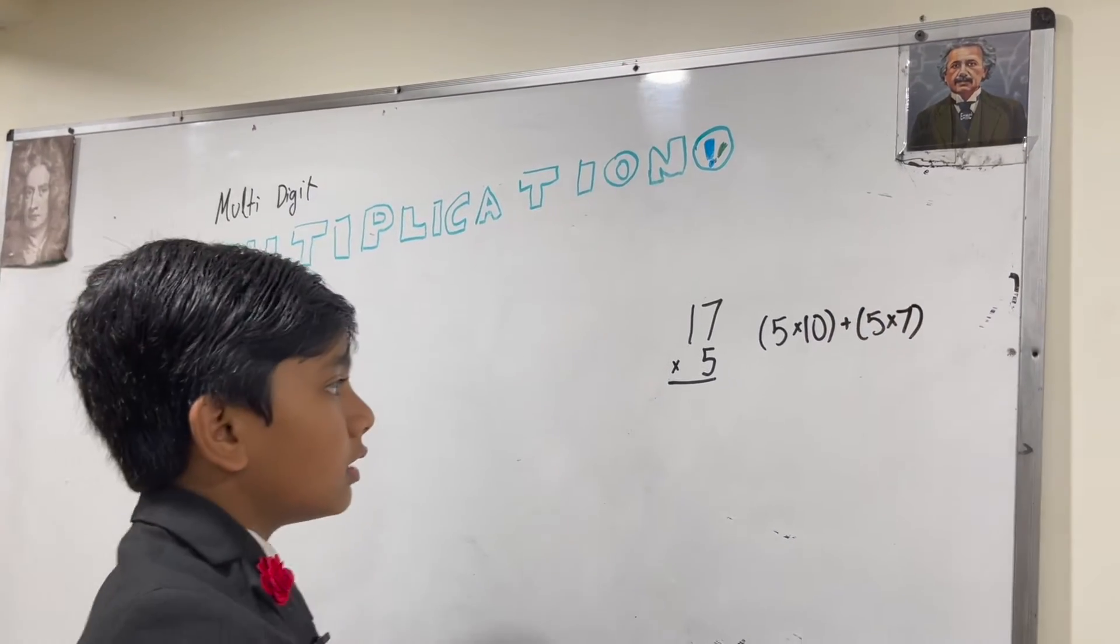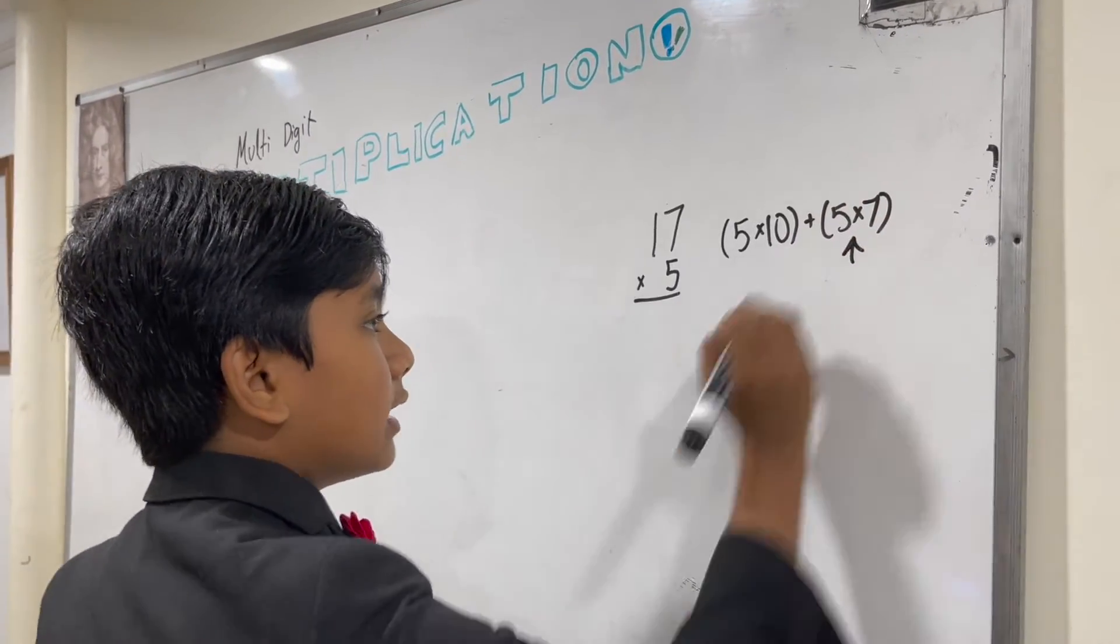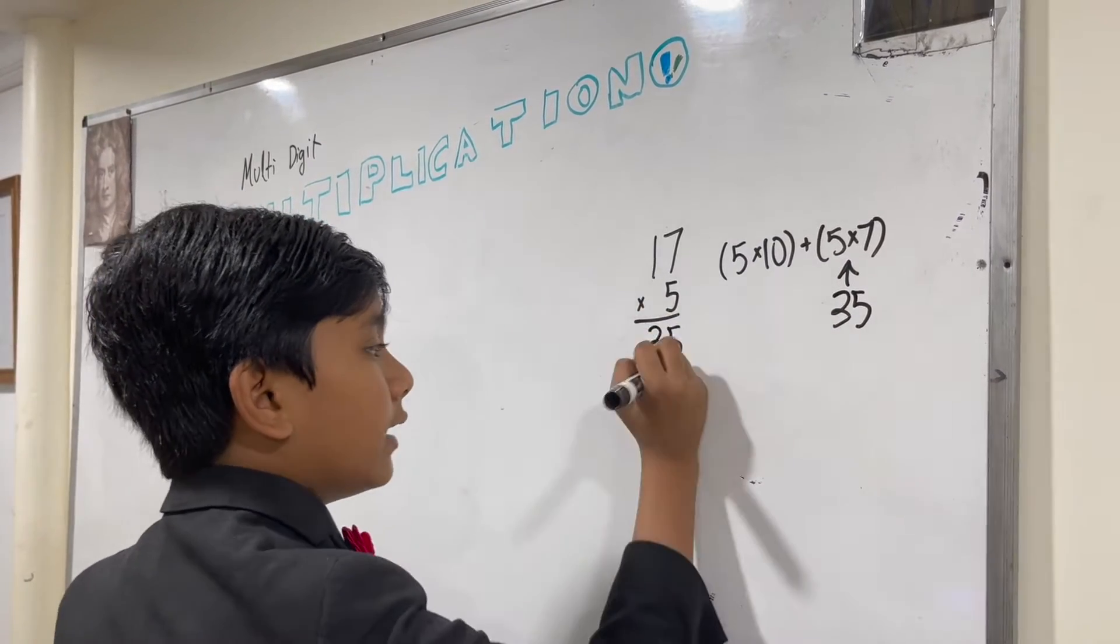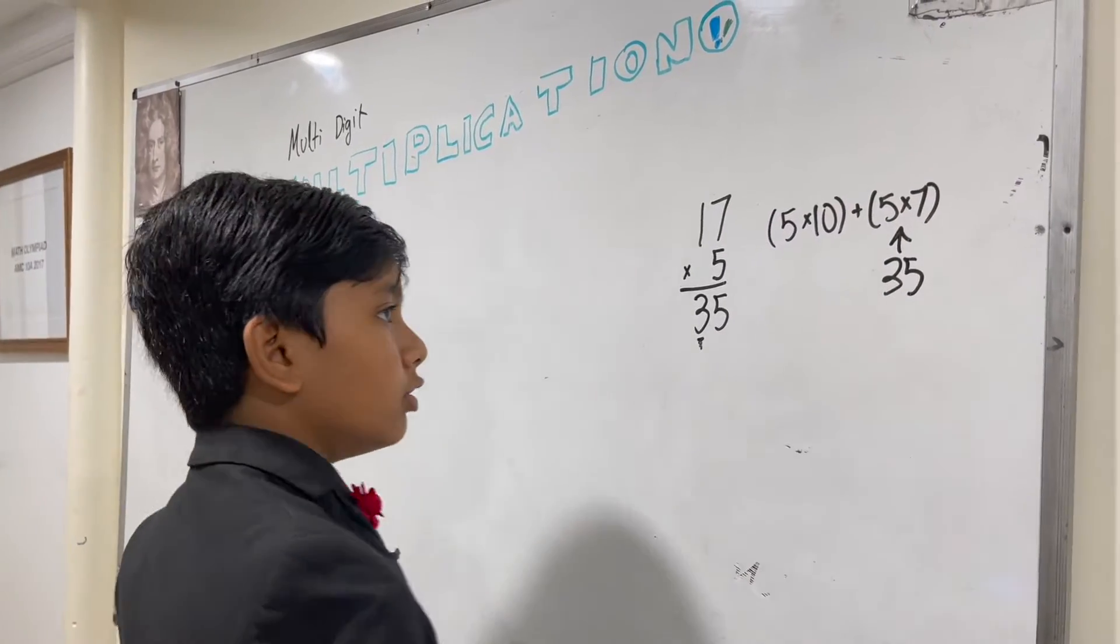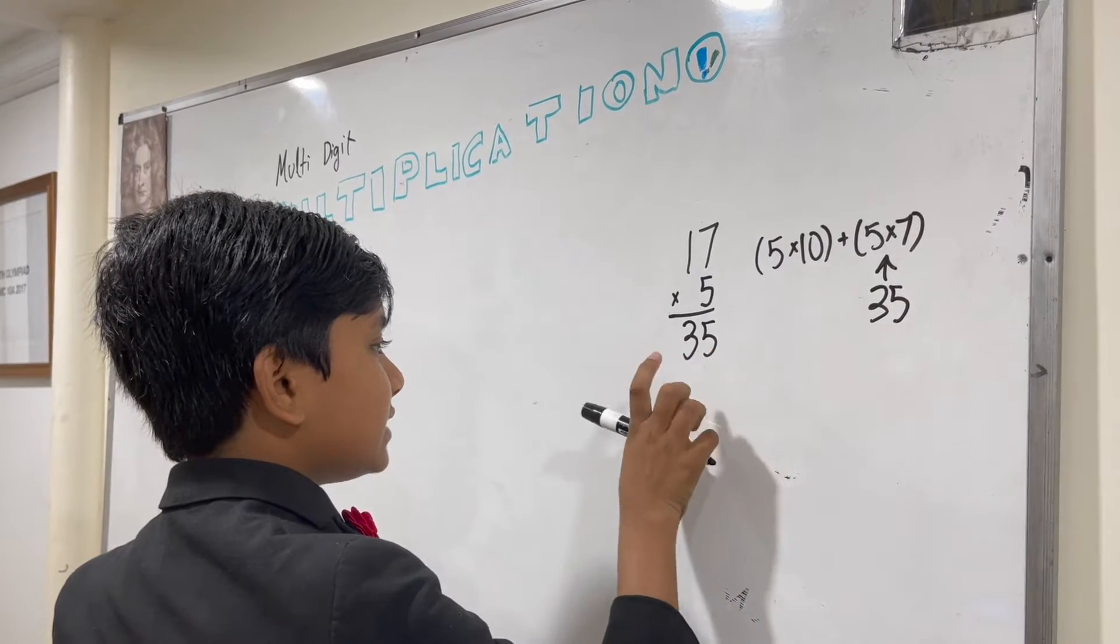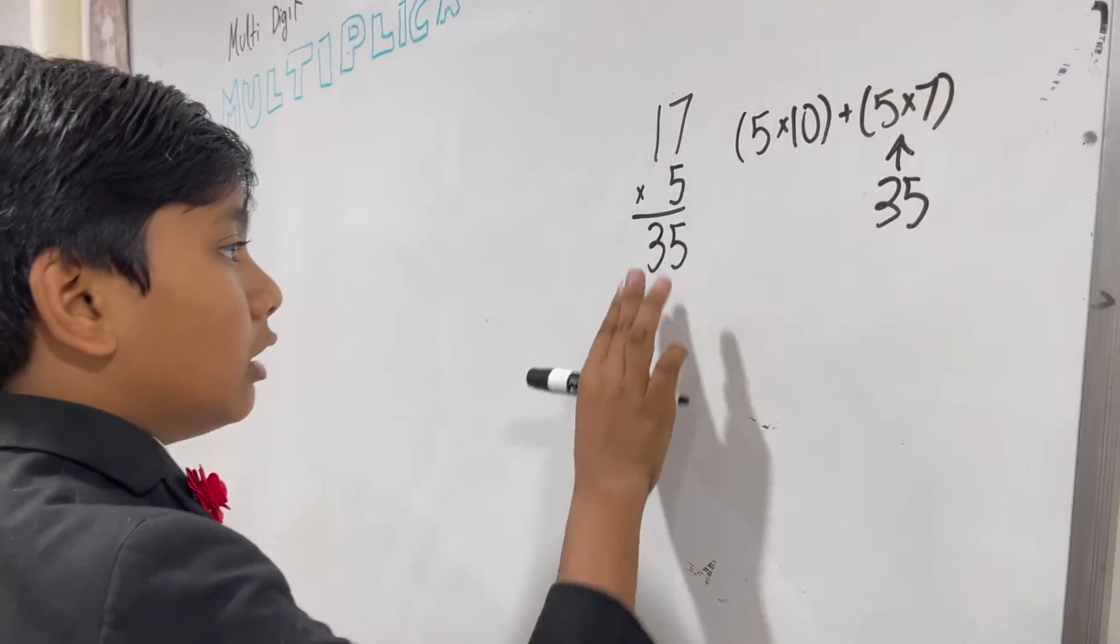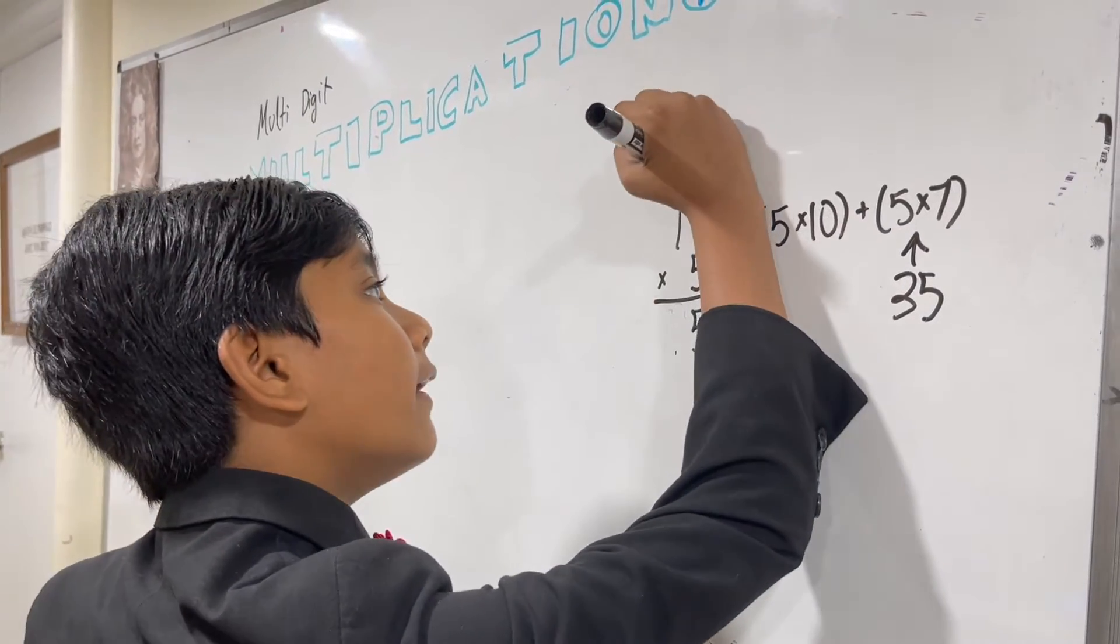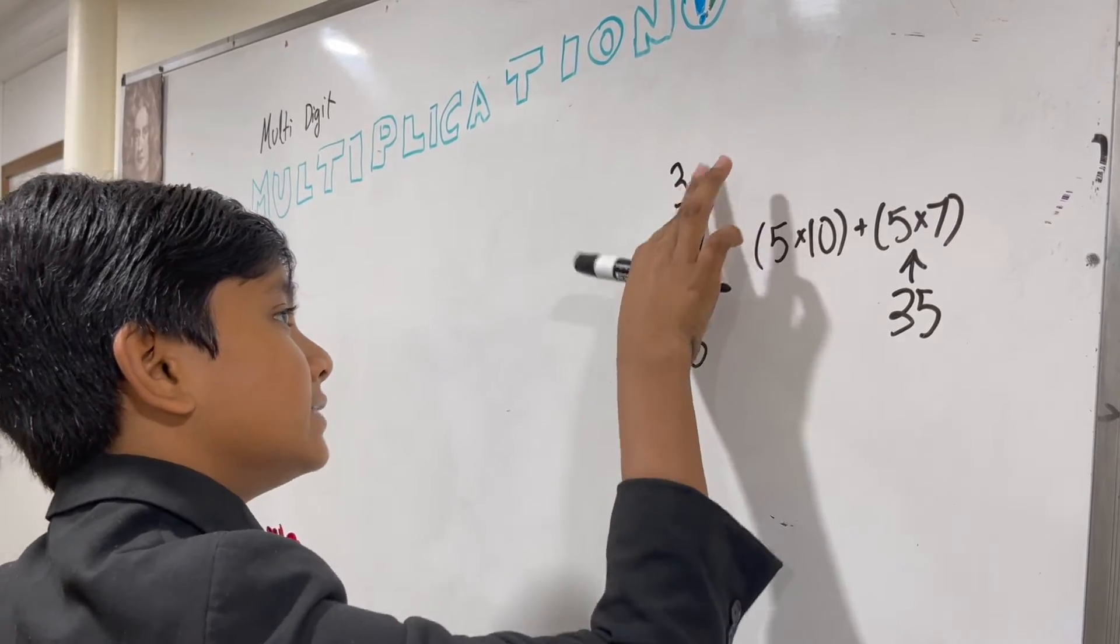So, what we're going to do is we're going to do 5 times 7 first. That's 35. But wait, 35 takes up 2 answer spaces. So, what can we do? Well, since this 3, which actually represents 30, is taking up the answer space, we're going to pluck that 3 from here and take it up above the 1. Technically it's 30, but the 0 doesn't do anything in this scenario.